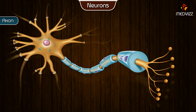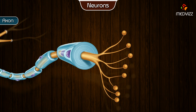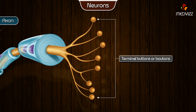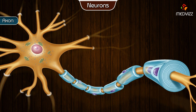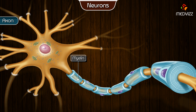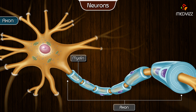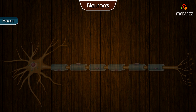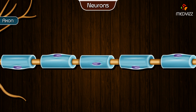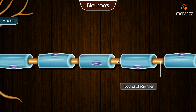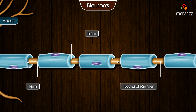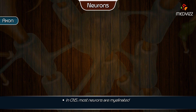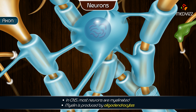The axon divides into presynaptic terminals, each ending in a number of synaptic knobs that are also called terminal buttons or boutons. In myelinated neurons, a sheath of myelin, which is a protein-lipid complex, is wrapped around the axon. In the peripheral nervous system, myelin is produced by Schwann cells which wrap the axonal membrane up to 100 times. The myelin sheath envelopes the axon except at its ending and at the nodes of Ranvier, periodic 1 µm constrictions that are about 1 mm apart. In the CNS, most neurons are myelinated, and myelin is produced by oligodendrocytes rather than Schwann cells.